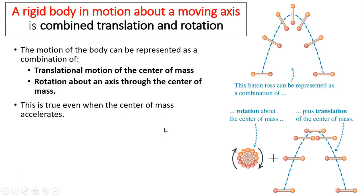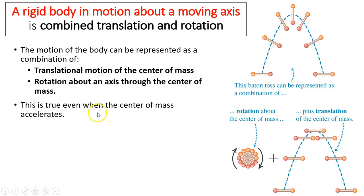A rigid body in motion about a moving axis is combined translation and rotation. Take a look at this baton — it can be represented as a combination of rotation about the center of mass, plus the translation of the center of mass, which is projectile motion. This is true even when the center of mass accelerates.